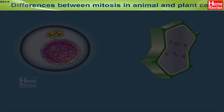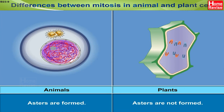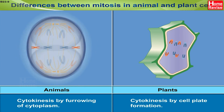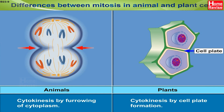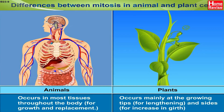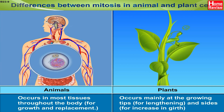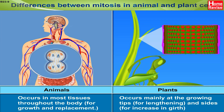Differences between mitosis in animal and plant cells: 1. In animals, asters are formed, while in plants, asters are not formed. 2. Cytokinesis occurs by furrowing of cytoplasm in animals, whereas in plants, cytokinesis occurs by cell plate formation. 3. Mitosis in animals occurs in most tissues throughout the body for growth and replacement, whereas mitosis occurs in plants mainly at the growing tips for lengthening and sides for increase in girth.